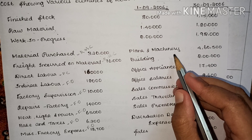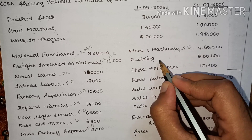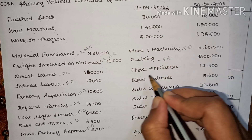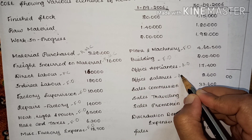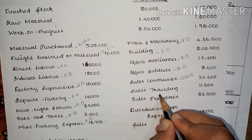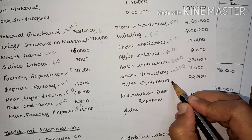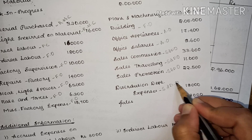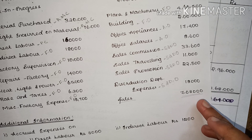Miscellaneous factory expenses also come under factory overheads. If there is any depreciation on plant and machinery or building, that will also come under factory overheads. Office appliances — administrative overheads. Office salary — administrative overheads. Sales commission — selling and distribution overheads. Sales traveling — selling and distribution overheads. Sales promotion — selling and distribution overheads. Distribution department expenses — selling and distribution overheads. And finally, sales, from which we will calculate the total cost and profit.